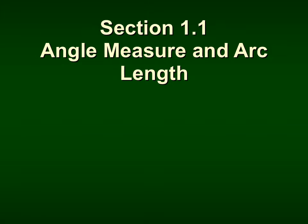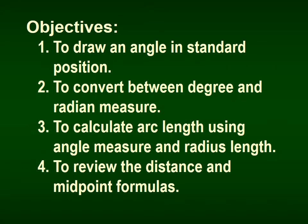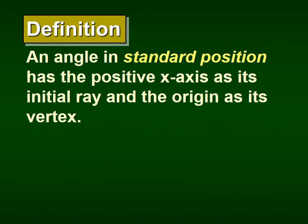This is section 1.1 in the BJU pre-calculus textbook. We're going to learn how to draw an angle in standard position, convert between degree and radian measures, use a formula to calculate arc length using angle measure and radius length, and in the homework problems you'll also see a formula for distance and midpoint — that's a review from algebra 2.